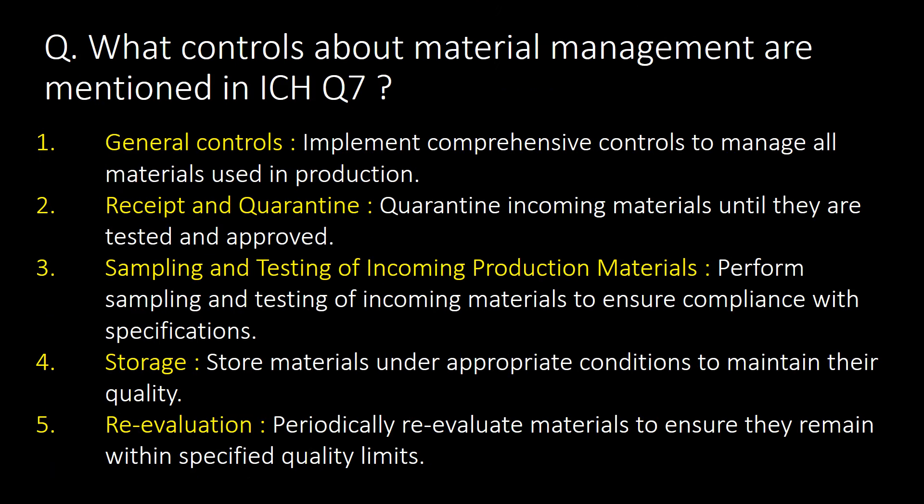What controls about material management are mentioned in ICH Q7? General controls, receipt and quarantine, sampling and testing of incoming production materials, and storage and reevaluation are the key controls about material management mentioned in ICH Q7.